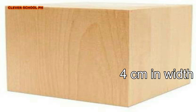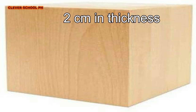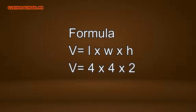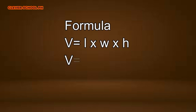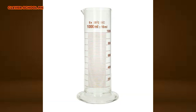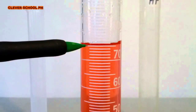If a rectangular block measures 4 cm in length, 4 cm in width, and 2 cm in thickness, what is the volume? The volume formula is length times width times height. The volume of a liquid is measured using a piece of equipment called the graduated cylinder. If you pour the liquid into the graduated cylinder, the number that coincides with the uppermost level of liquid is its volume. The unit of volume for liquids is milliliters (mL).